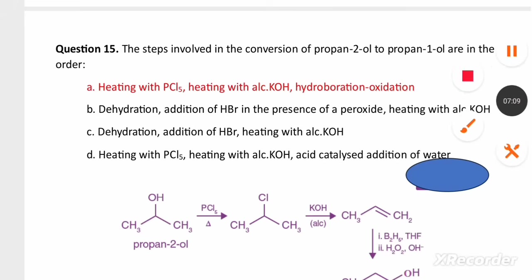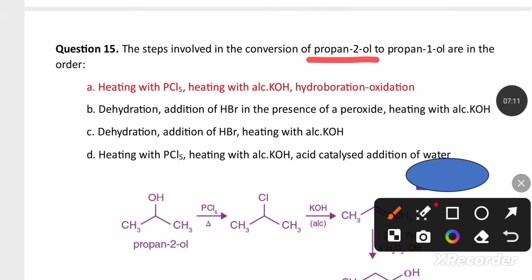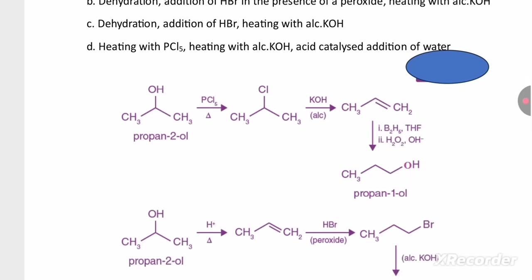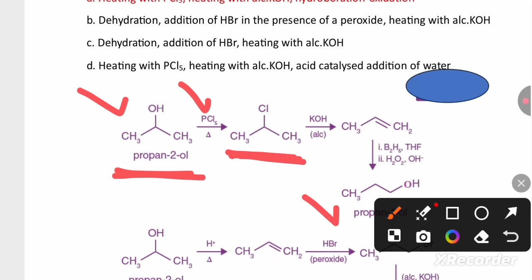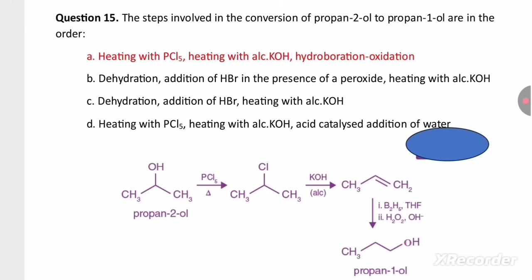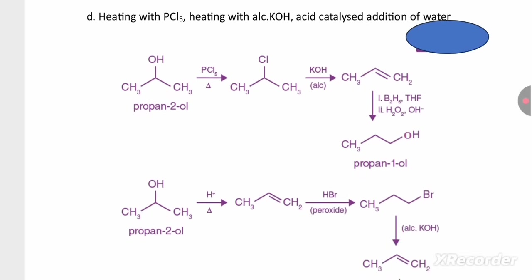The steps involved in the conversion of propan-2-ol to propan-1-ol: propan-2-ol is a secondary alcohol that needs to be converted into a primary alcohol. Treating propan-2-ol with phosphorus pentachloride gives 2-chloropropane. This on treating with alcoholic KOH undergoes beta-elimination (dehydrohalogenation) to produce propene. Treating propene with hydroboration-oxidation gives propan-1-ol. So the sequence is PCl5, then alcoholic KOH, then hydroboration-oxidation.